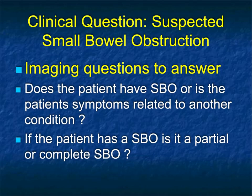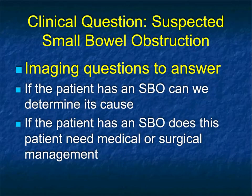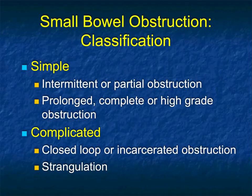When evaluating a patient with small bowel obstruction, it's good to think about what questions you need to answer for the referring physician. There are really two big questions: Does the patient have a small bowel obstruction, or are there other findings that explain the symptoms? And if the patient does have a small bowel obstruction, is it partial or complete? The question is essentially discharge versus admission in the ER setting. If the patient has an obstruction, can we determine its cause — Crohn's disease, tumor, abscess, stricture, ischemic bowel? Is this a medical or a surgical problem?